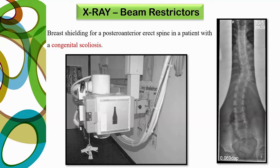For beam restriction, you can see breast shielding used in a posterior-anterior spine study with a patient with congenital scoliosis — this uses a lead aperture attached to the collimator box. Lead apertures of different sizes and shapes can be used for different studies.